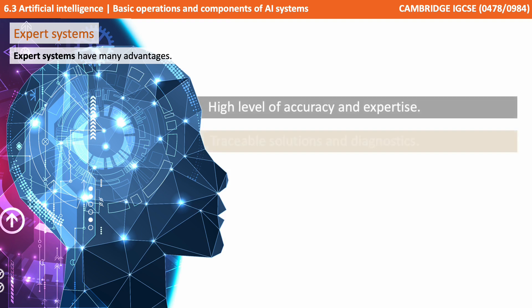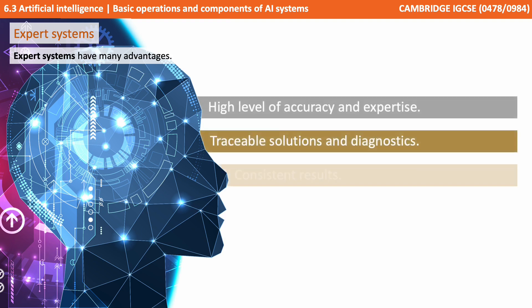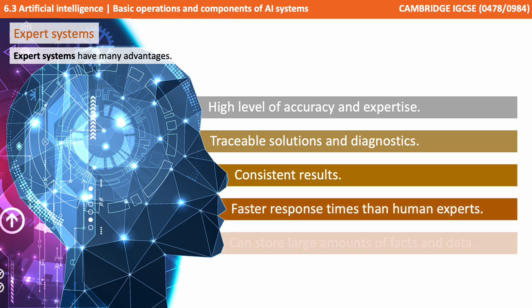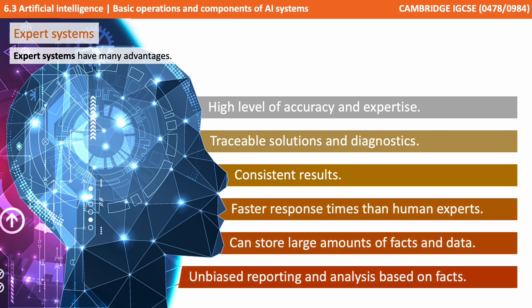There are many advantages to expert systems. They offer a high level of accuracy and expertise. Their solutions and diagnostics are traceable and they produce very consistent results. They tend to have a much faster response time than human experts. And they can store vast amounts of facts and data. They are also unbiased, simply reporting and analysing on facts.